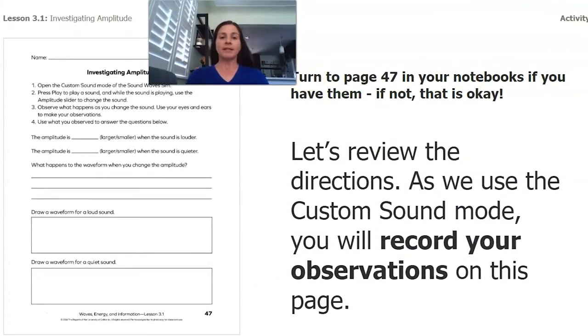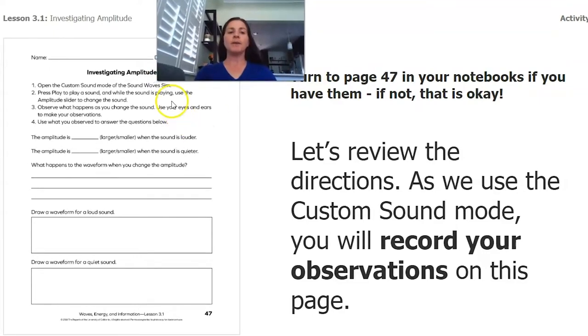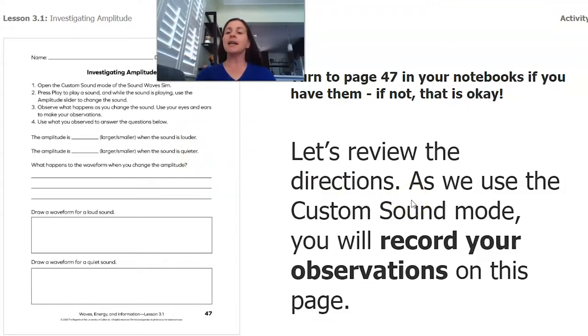If you have page 27, if you've got your student investigation notebook, you can turn to it because there are some observations that you can make during it. If you don't have page 47, that's okay too. You can always write down your observations on a piece of paper. So we're actually going to look at those directions first. You're going to see what I'm going to do in the sim. And if you have the student app, you can follow along too.